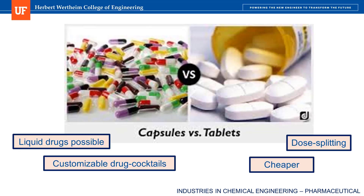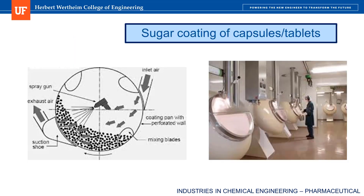For capsules, you can load them with liquid APIs too, which tend to absorb faster in the body and therefore relieve your pain faster. You can also more easily design drug cocktails in the same pill. Tablets, on the other hand, are cheaper to produce and also allow the patient to split the dose. However, a downside of tablets is that they taste and smell absolutely nasty — they would, if chemical engineers hadn't come in to save the day. One of the last parts of the manufacturing process is the spray coating of tablets with a sugar solution. This masks the taste of the API as it's swallowed. Engineers design the spray coaters that make this happen, and also need to understand how mixing mechanisms and the time in the spray coater affect the thickness of the spray-coated film.